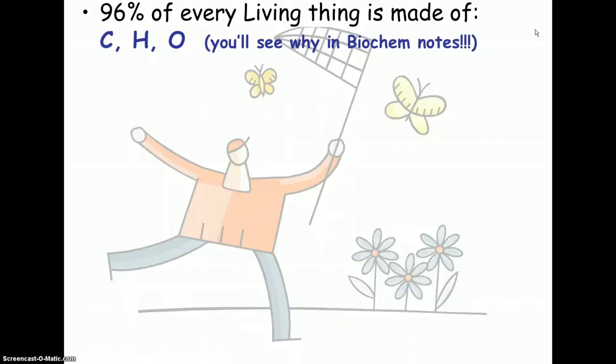As I mentioned in the lecture on characteristics of living things, 96% of every living thing is really composed of just three main elements: carbon, hydrogen, and oxygen. You could remember this by remembering CHO.